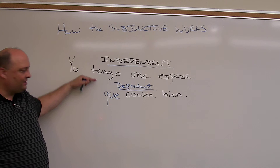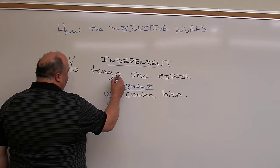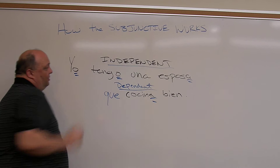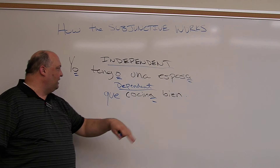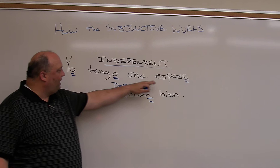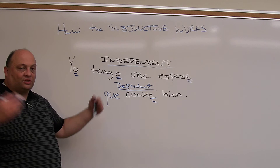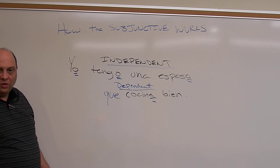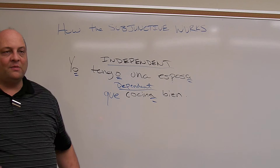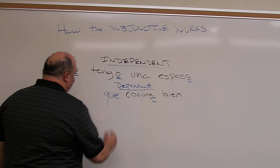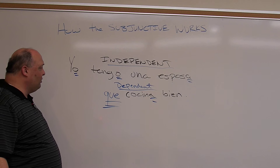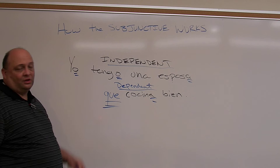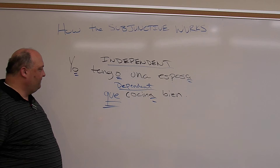Yo tengo una esposa que cocina bien. Notice there are two subjects — yo and esposa. The subject of the second clause is esposa. We're using two subjects and putting them in one sentence. In Spanish, we always have to have the 'que' when we combine these two sentences — it has to be there. Yo tengo una esposa que cocina bien. We use 'que' to link these two together — it always has to be there.